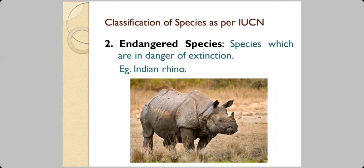Endangered species are those in danger of extinction. If they are not conserved now, they will be gone forever. The Indian rhino is one example. Others include the black buck, crocodile, lion-tailed macaque, Sangai deer, and the Indian wild ass.